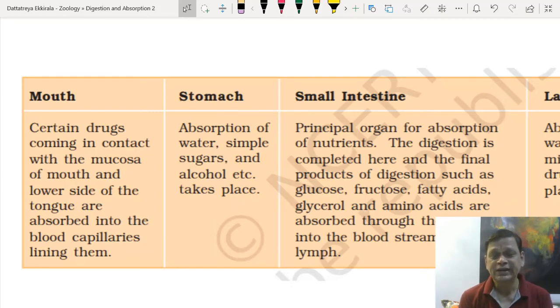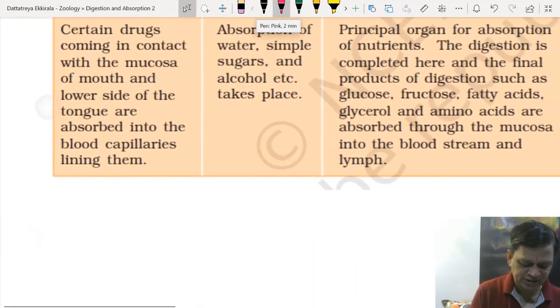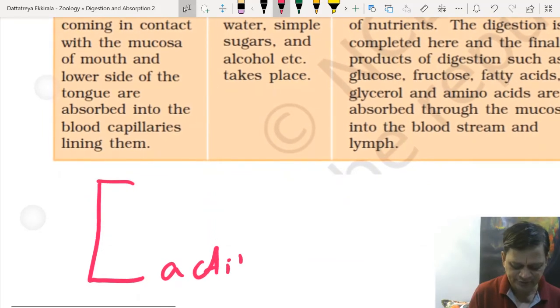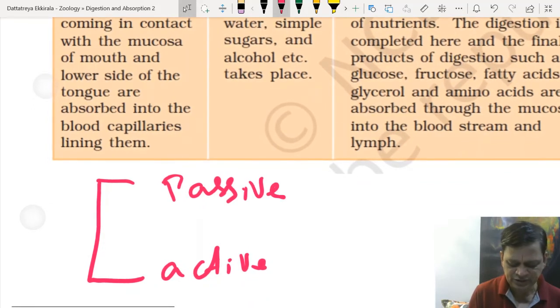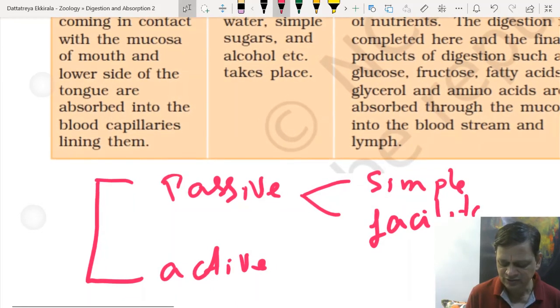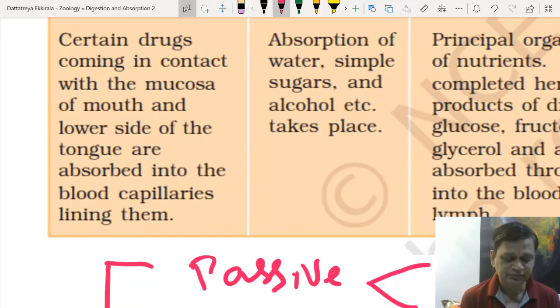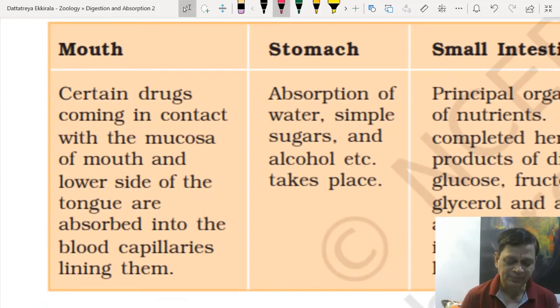Absorption of food material can take place by active and passive transport. Spending energy is active. Against concentration gradient absorption is active transport; otherwise, it's passive transport. Passive can be simple diffusion or facilitated diffusion by special proteins. In mouth, certain drugs contacting the mucosa and lower side of tongue are absorbed into blood capillaries. Some sugars also. In stomach, water, simple sugars, and alcohol absorption takes place.